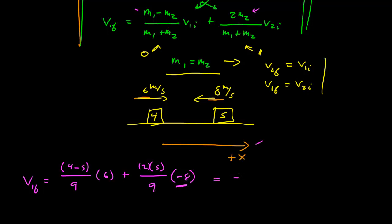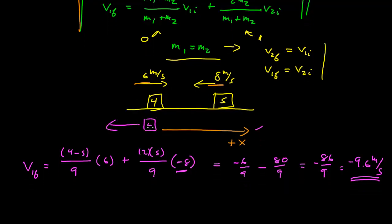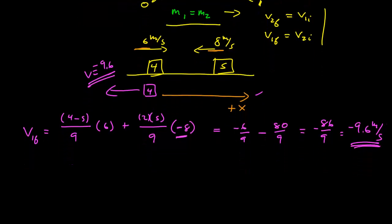So at minus 86 ninths, which is approximately minus 9.6 meters per second. So interestingly, after the collision, mass 1 is going in the negative x direction, it rebounds off the first, and it has a speed higher than either of the speeds before. So it comes in and rebounds at a higher velocity, a higher speed, in the negative x direction. So that's kind of interesting.